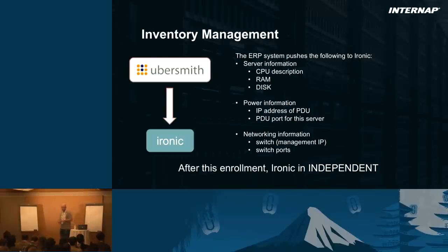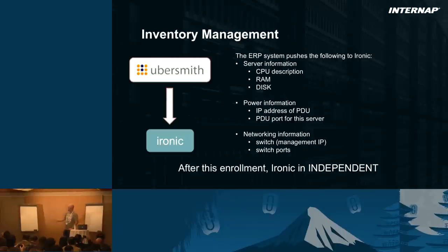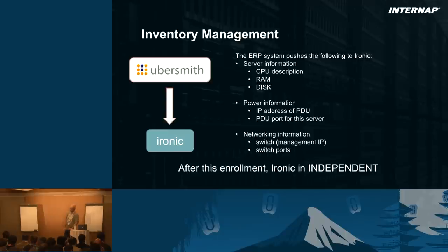The ERP system pushes to the Ironic node: it creates an Ironic node corresponding to the physical server, then pushes down CPU, RAM, and disk information needed to instantiate a flavor. It will also push power information — the IP address of the power distribution unit and the ports to which the server is connected. At this point, Ironic has the information to power on and off the machine. It also pushes networking information: management IP for a switch and the ports. After this enrollment process, Ironic is completely independent — no tight coupling to Ubersmith.